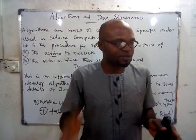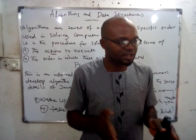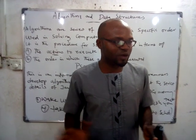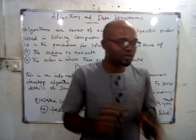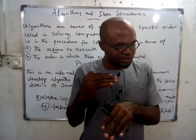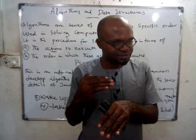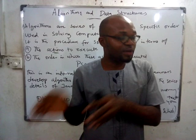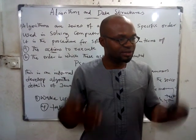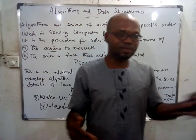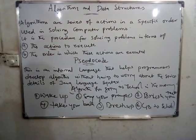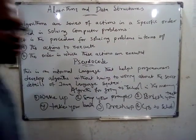The first thing you need to do comes first before the second one. If you're writing an algorithm to develop a software for going to school, you need to wake up first, say your prayers, brush your teeth, take your bath, dress up, and go to school. This is a simple explanation of an algorithm.